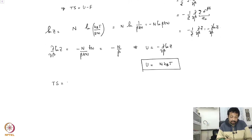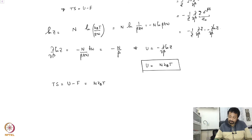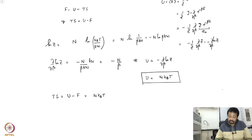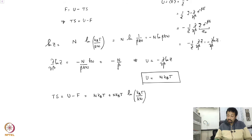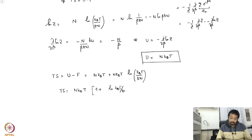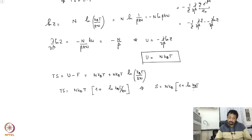Now TS equals U minus F, so with U equals N k_B T and F equals minus N k_B T ln(k_B T over h-bar omega), we get TS equals N k_B T times (1 plus ln(k_B T over h-bar omega)). This implies that the entropy is S equals N k_B times (1 plus ln(k_B T over h-bar omega)).